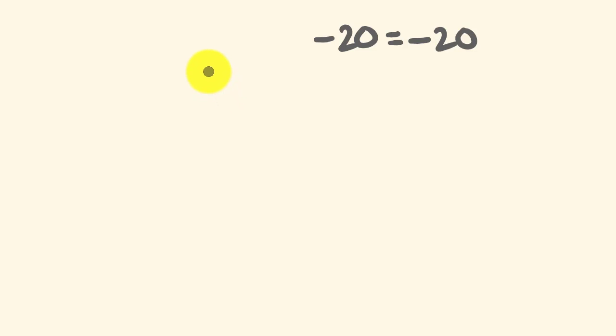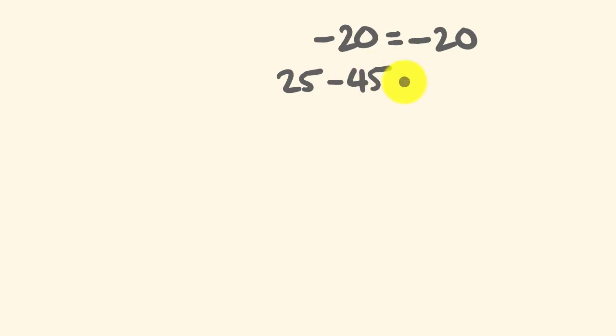I'm going to start out with the idea that we have negative 20 equal to negative 20 — nothing wrong there. The next thing I do is change these around into two equivalents of negative 20: the first one is 25 take away 45, and this one is 16 take away 36.